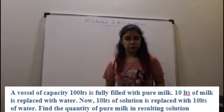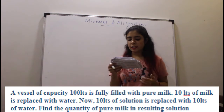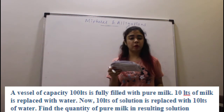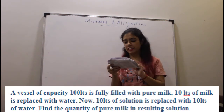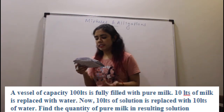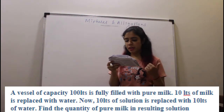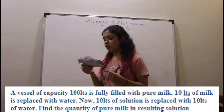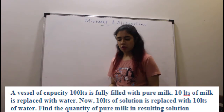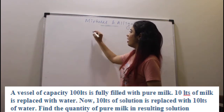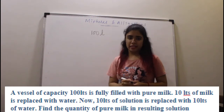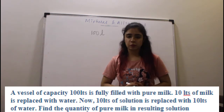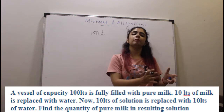Now let's look at the next question. A vessel of capacity 100 liters is fully filled with pure milk. 10 liters of milk is replaced with water. Now 10 liters of the solution is replaced with 10 liters of water. Find the quantity of pure milk in the resulting solution. So you have 100 liters of pure milk, first you replace 10 liters with water, then again you replace 10 liters with water — what is the final amount of milk?